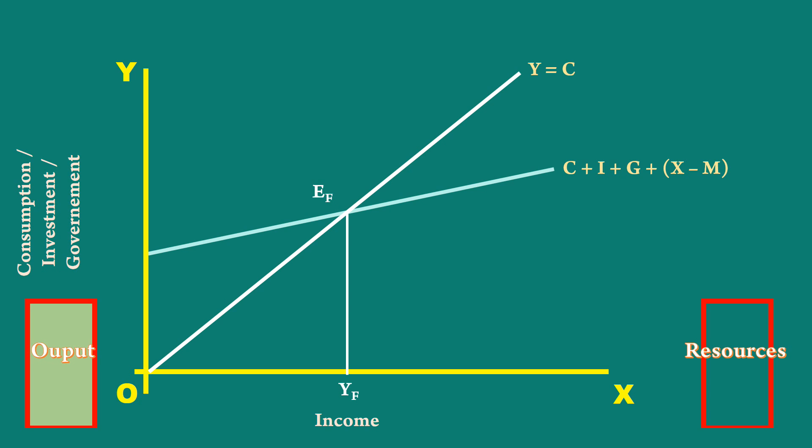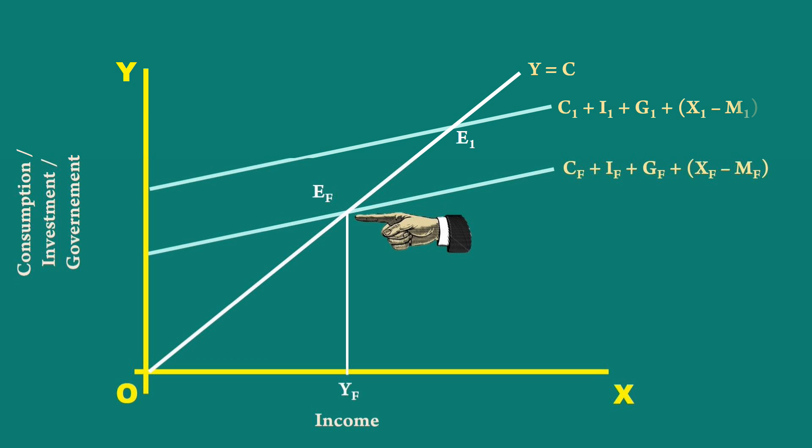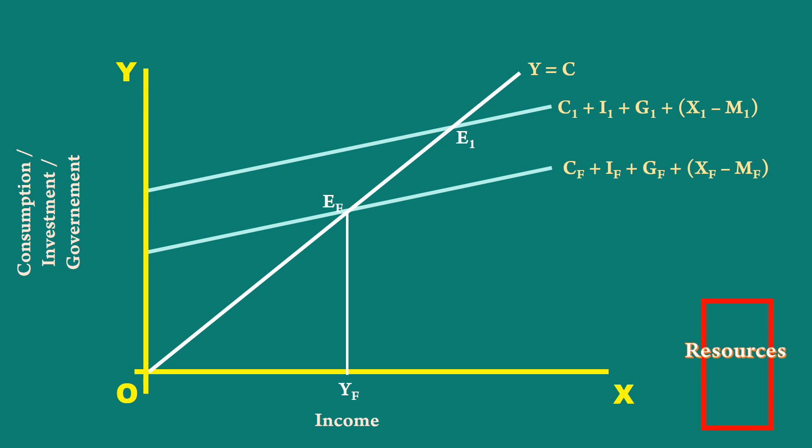What is inflationary gap? Look at this graph. The economy is in equilibrium at EF. A new investment is undertaken in the economy. The aggregate demand curve is shifted up. The new aggregate demand curve is C1 plus I1 plus G1 plus X1 minus M1. The economy cannot move to point E1 because there are no more resources to expand the output beyond YF. YF is the potential output. The economy moves up vertically and operates at point A.